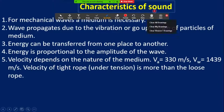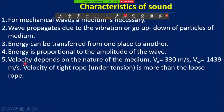Characteristics of sound waves: for mechanical waves, a medium is necessary. The wave propagates due to vibration of particles of the medium. Energy can be transferred from one place to another, and energy is proportional to the amplitude of the wave. Velocity depends on the nature of the medium — for air it is 330 m/s, for water it is 1439 m/s, and velocity of a rope under tension is more than that of a loose rope.